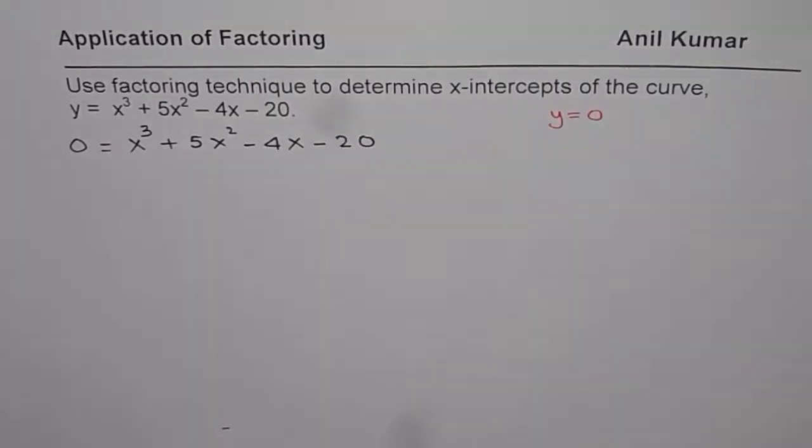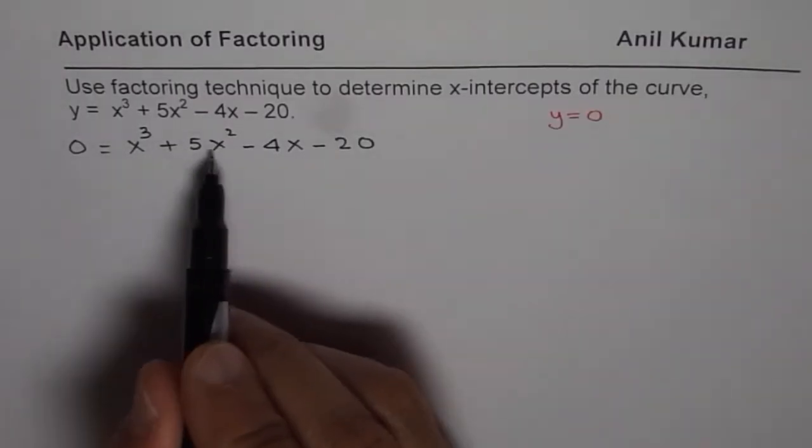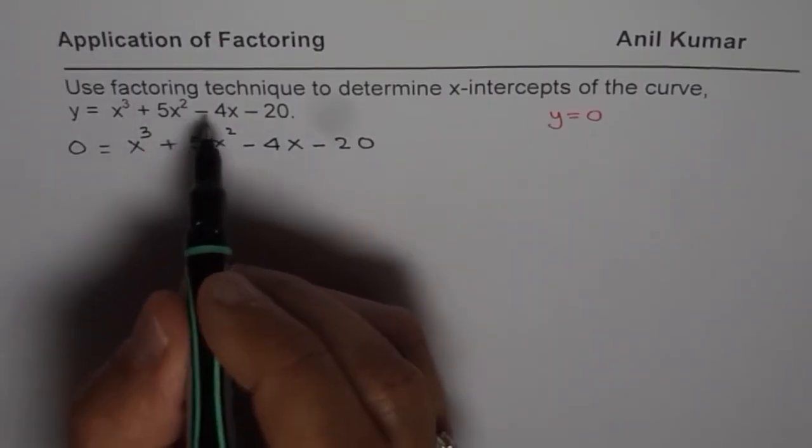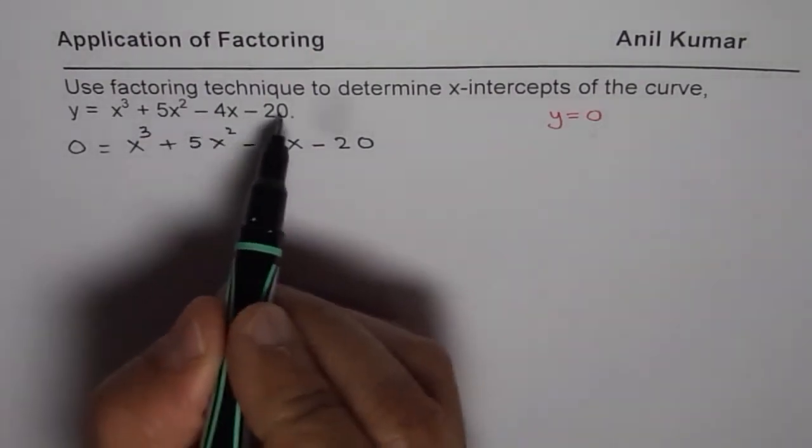Now, we need to factor this equation so that we can easily find what values of x will make this 0. As you can see, we could factor by grouping in this particular case. When we have 4 terms, we try to do it 3 and 1 or 2 and 2.